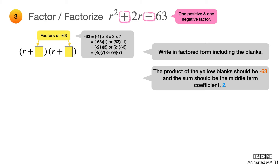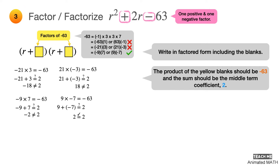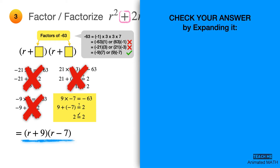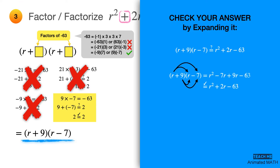We can already start eliminating candidate factors by observing the difference between each pair of factors. Since the coefficient of the middle term is 2, it means that the factors we are looking for should only have a small difference. That leaves us with either negative 9 and 7 or 9 and negative 7. This process of elimination will help save you a lot of time, especially when you are taking an exam. For demonstration, let's find the sum of negative 21 and 3, and the sum of 21 and negative 3 as well. The factors we are looking for are 9 and negative 7. Fill in 9 and negative 7. The final answer is R plus 9 times R minus 7. Don't forget to check your answer by expanding it using polynomial multiplication as shown here.